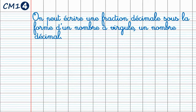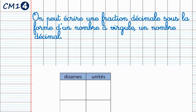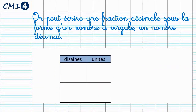On peut écrire une fraction décimale sous une autre forme, sous la forme d'un nombre à virgule. C'est ce qu'on appelle un nombre décimal. Pour cela, nous utiliserons un tableau de numération. Nous connaissons le tableau de numération pour les nombres entiers, avec les unités, les dizaines, les centaines, répartis dans plusieurs classes : la classe des unités, la classe des milliers, la classe des millions et la classe des milliards.